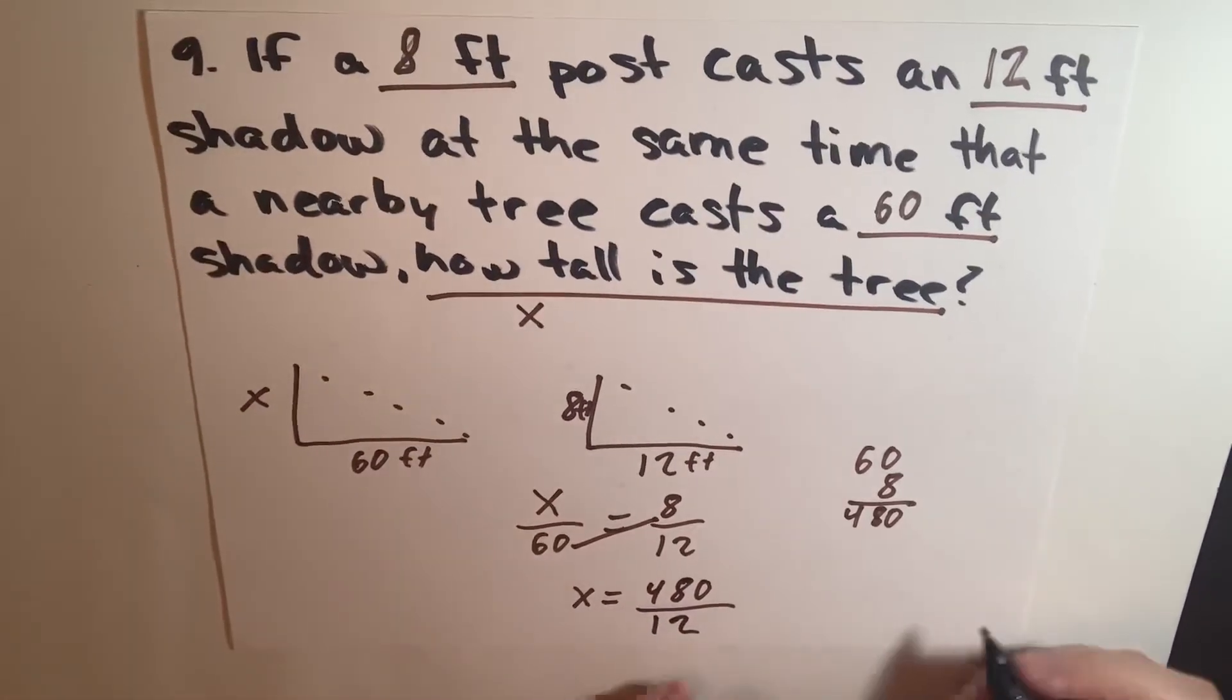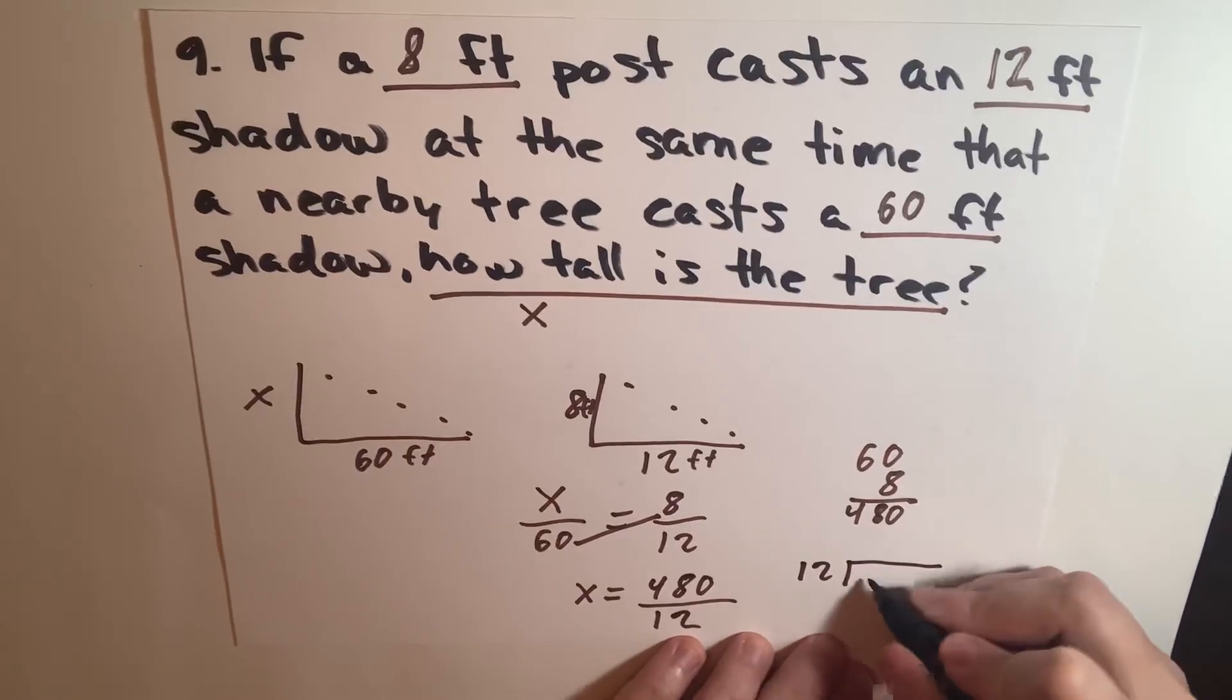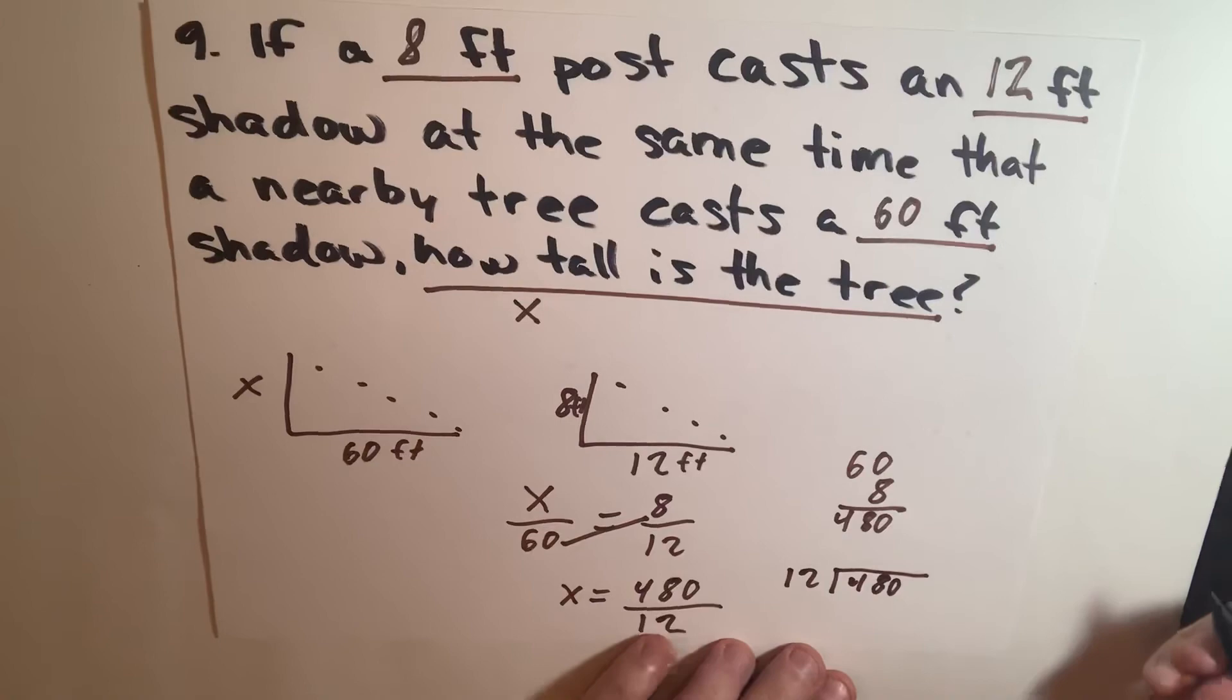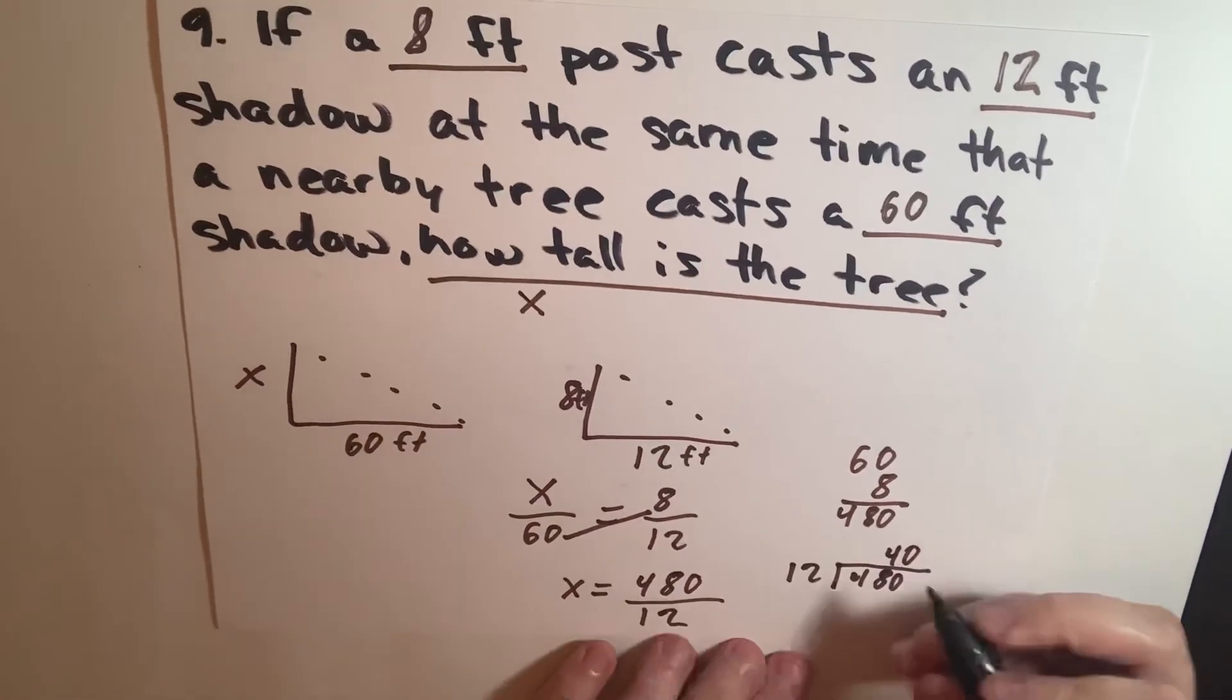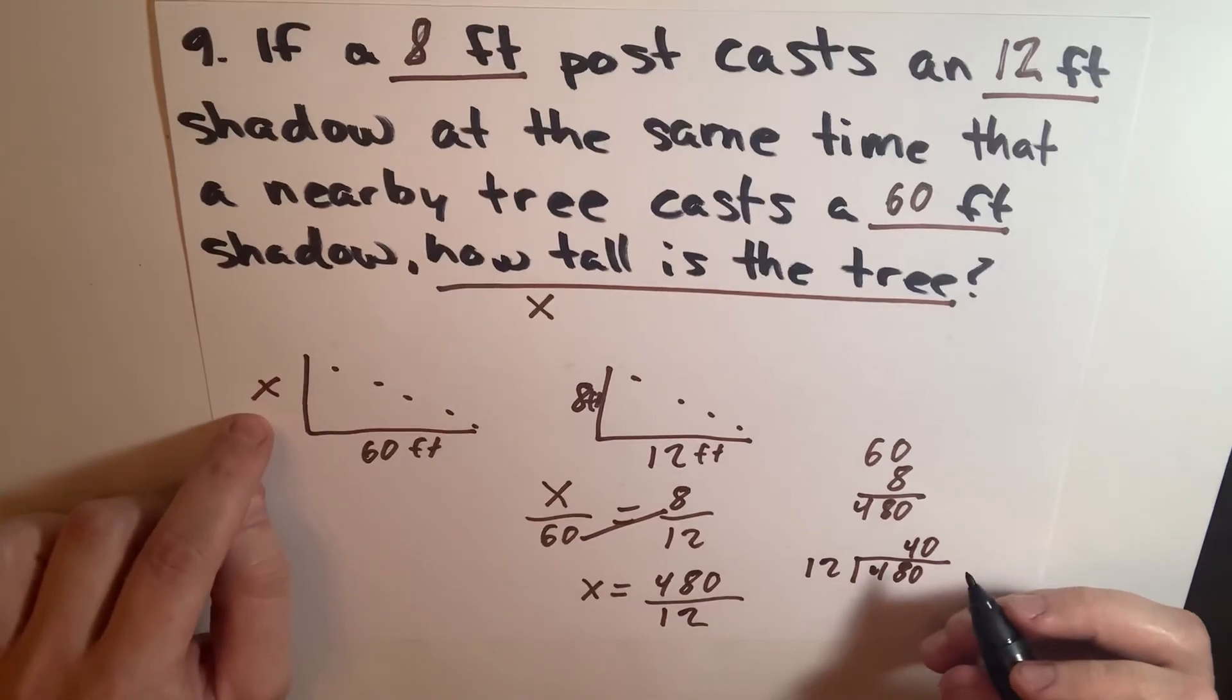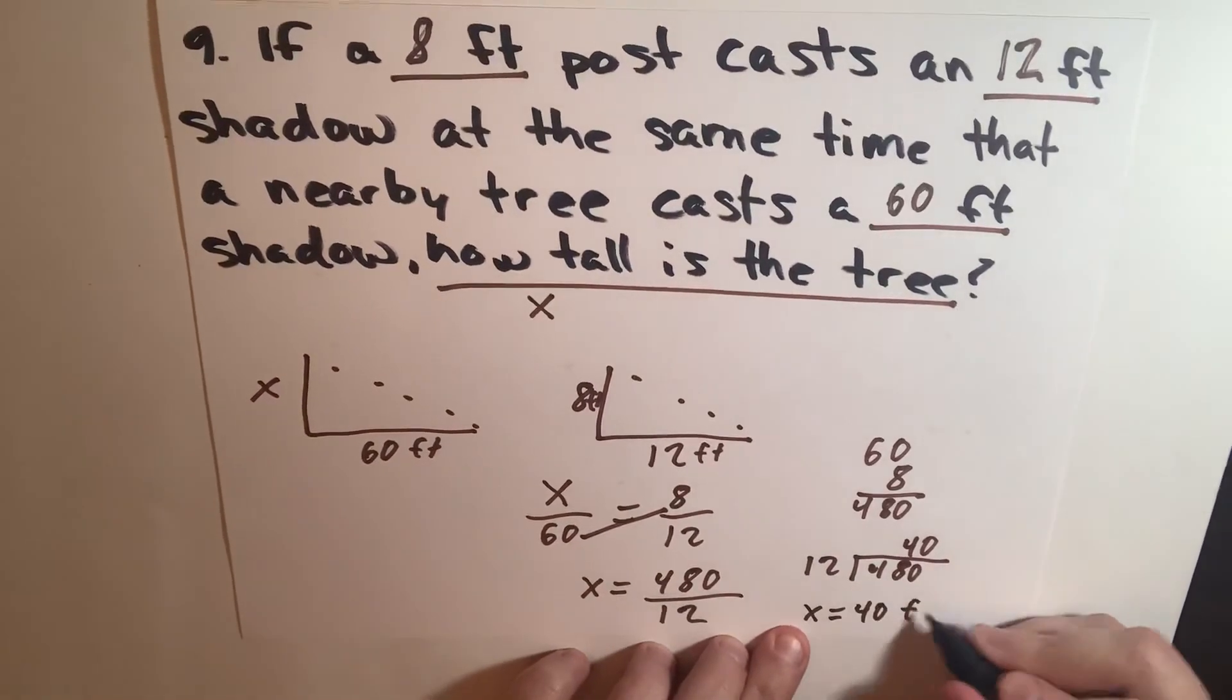So we're going to have 480 over 12, but that can be simplified. So we're going to divide the 12 into 480, which equals 40. So your height of the tree for x is going to be 40 feet.